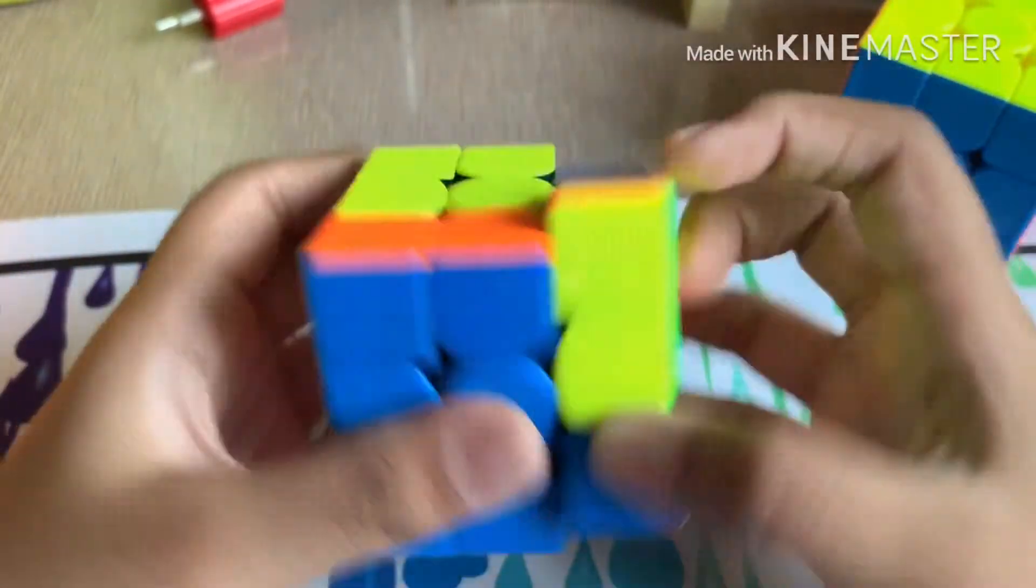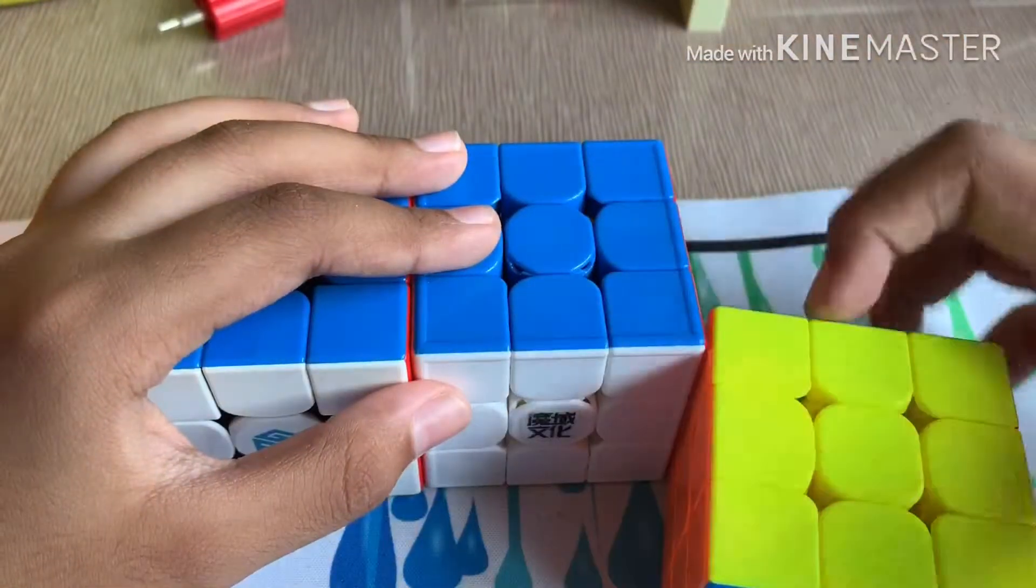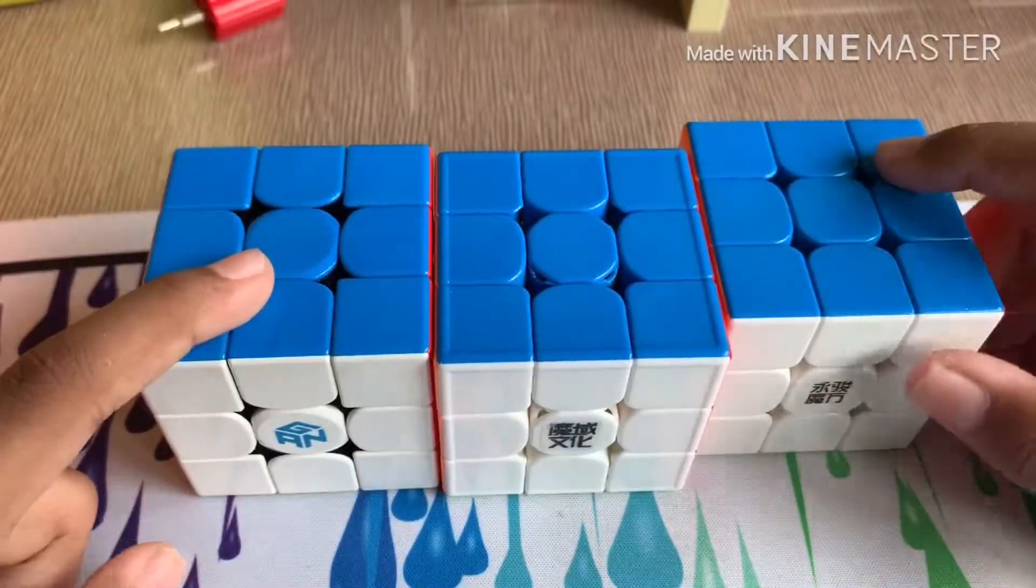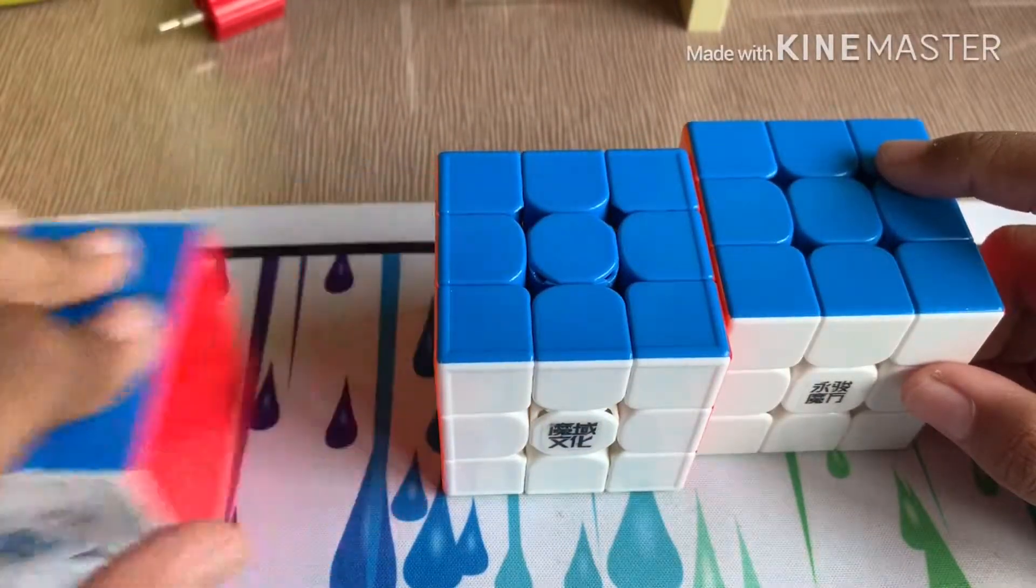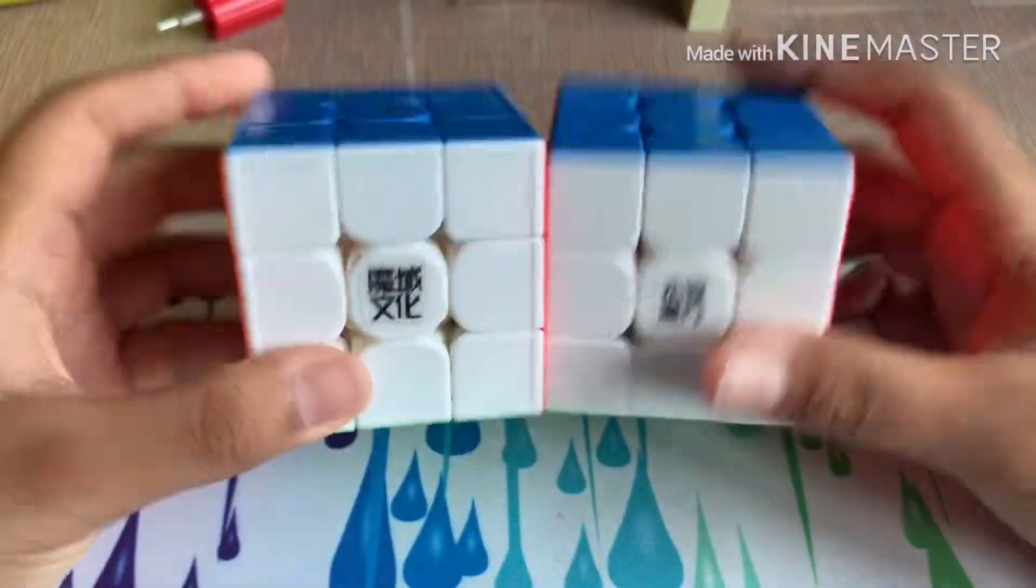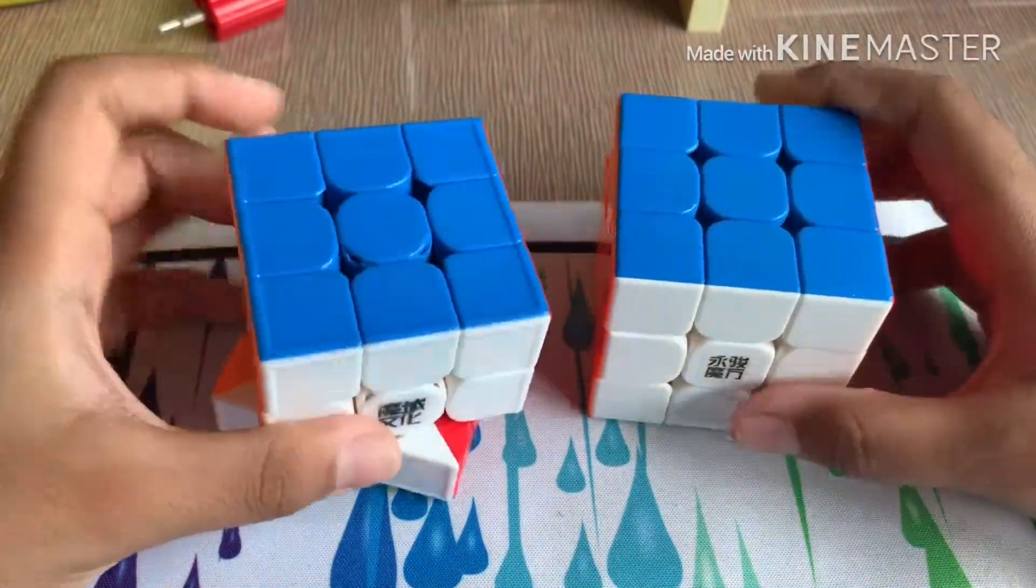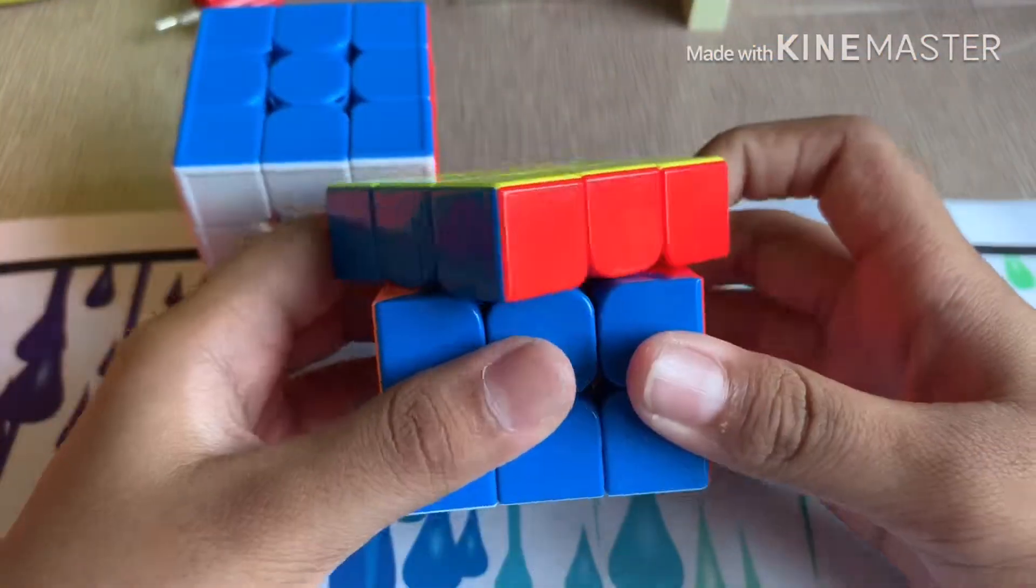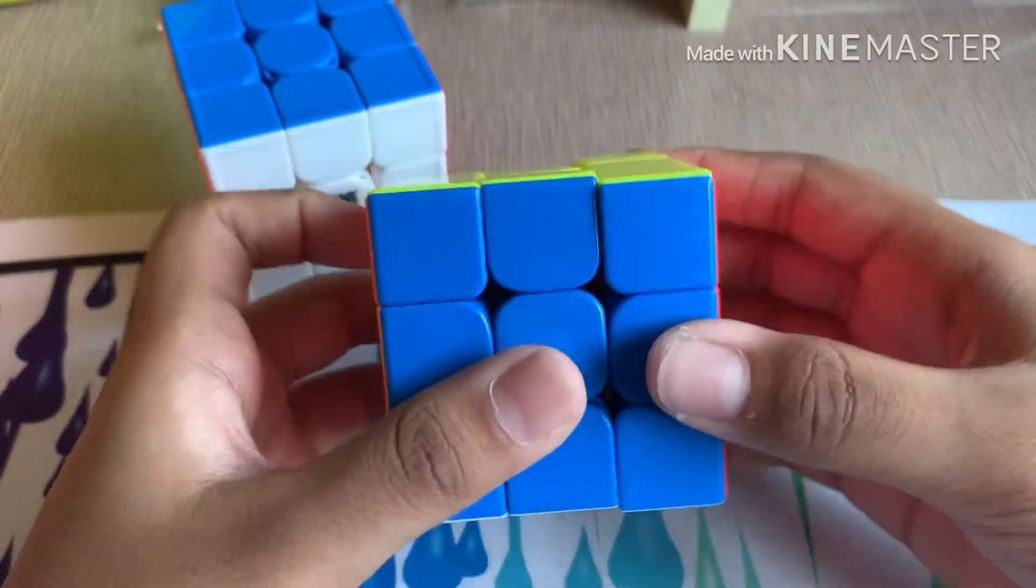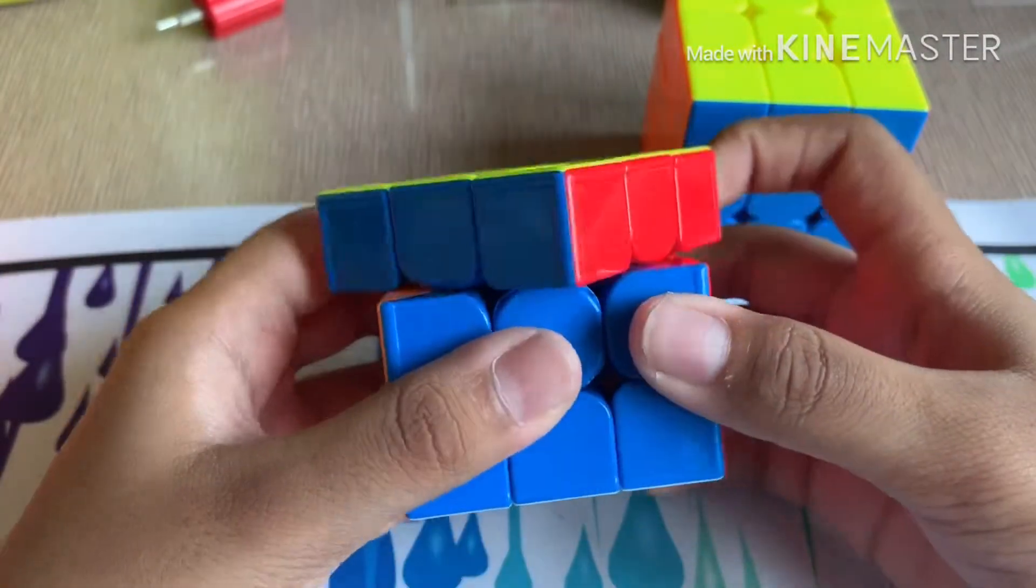So which one will be my main? Let's go over the points. This I do not enjoy solving on, so that's already out of the question. Now both of these, corner cutting is as good, both the same. Yulong effortless, I don't know, I don't really care too much on corner cutting as long as it's 45 degrees I'm satisfied.